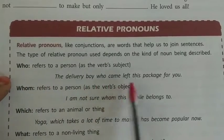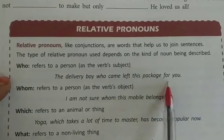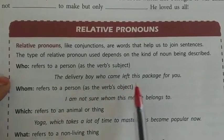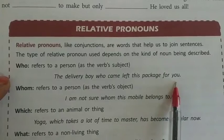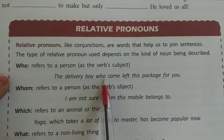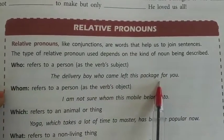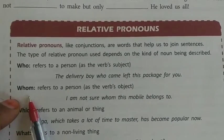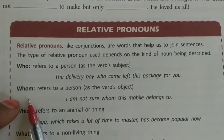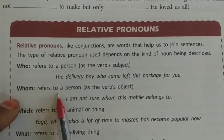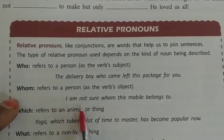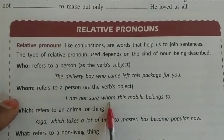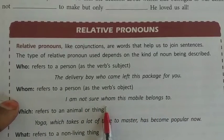'The delivery boy who came left his package for you.' यानि delivery boy जो आया था वो package छोड़ के गया। 'Whom' also refers to a person - जो interrogative में 'किसका' था वो relative pronoun में 'जिसका' बन जाता है। Example: 'I am not sure whom this mobile belongs to.' - मैं sure नहीं हूँ कि यह mobile किसका है।